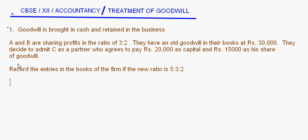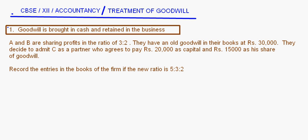When dealing with this case — goodwill is brought in cash and retained in the business — first of all, the new partner is bringing in goodwill and capital. So the first entry is: bank account debit to C's account for rupees 20,000, which is C's share of capital.